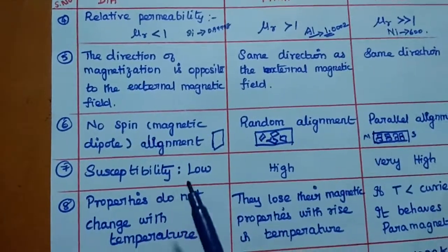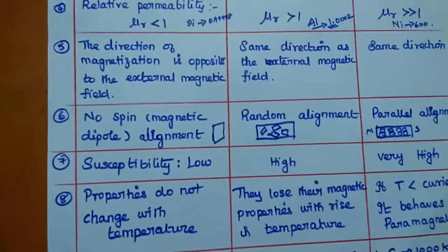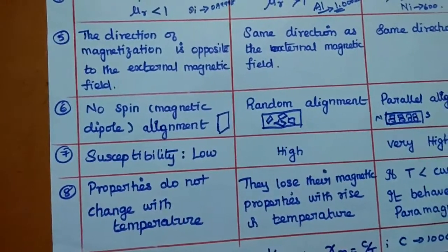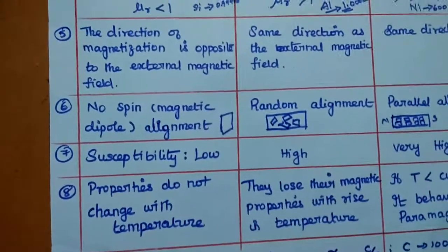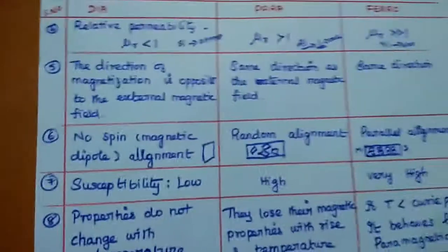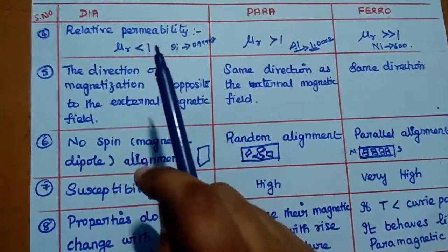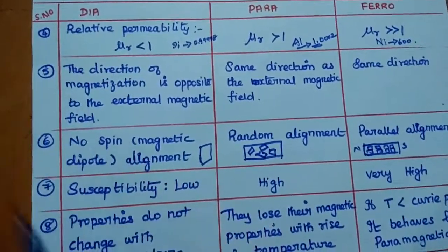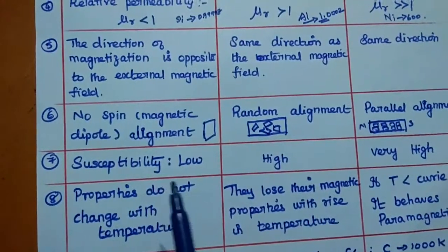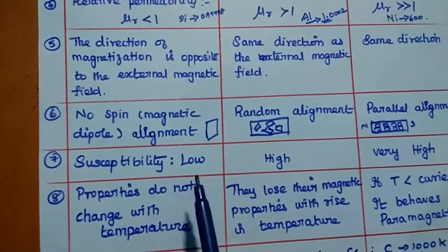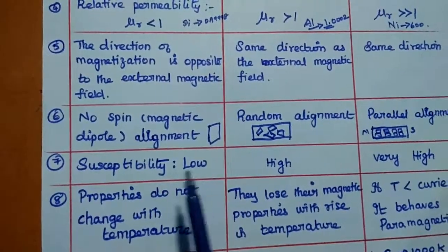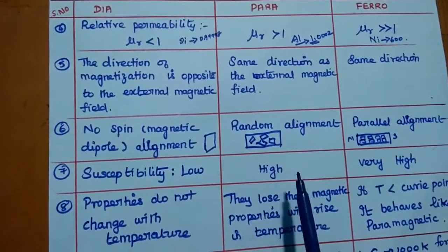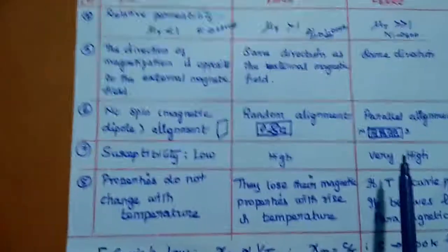Next is susceptibility, which is a measure of how much a material will become magnetized in an applied magnetic field. For diamagnetic materials, susceptibility is low. For paramagnetic materials, it is higher. For ferromagnetic materials, susceptibility is very high.